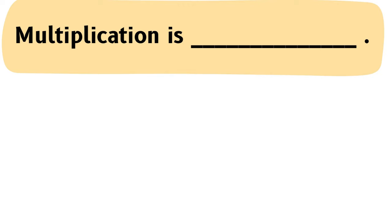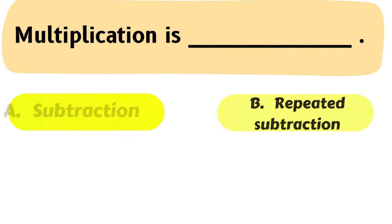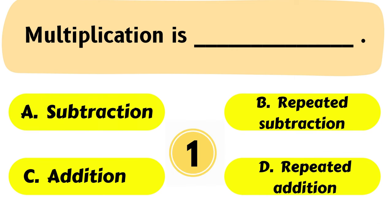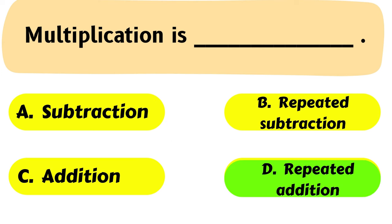Question No. 36: Multiplication is ___. A. Subtraction, B. Repeated Subtraction, C. Addition, D. Repeated Addition. The correct answer is Option D: Repeated Addition.